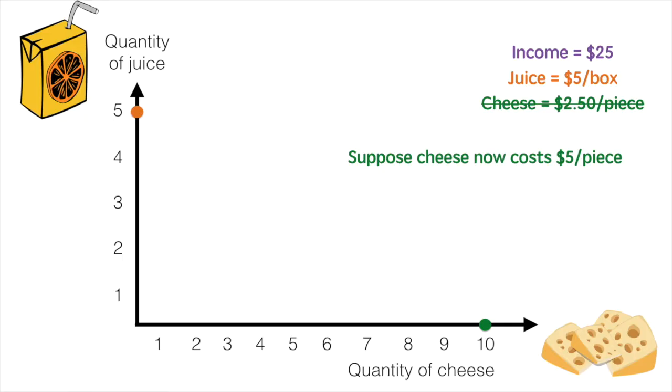Similar to the video before, we increased the price of cheese to $5 a piece, which reduces the maximum amount of cheese we can buy to 5 pieces. This causes the budget line to pivot inwards.